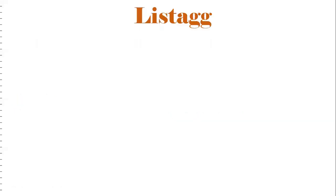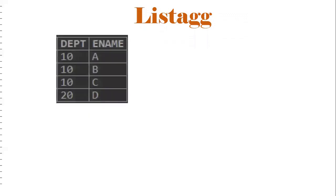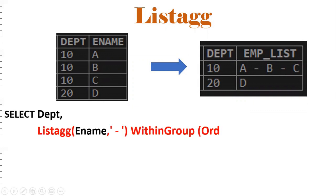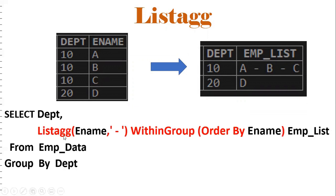Let's see one example to make the LISTAGG concept clear. This is a department table with department ID and employee name. My requirement is to display the employee list for department 10 — A, B, C — separated by a hyphen: A-B-C. To solve this, we use LISTAGG(ename, '-') WITHIN GROUP ORDER BY ename AS employee_list FROM emp_data GROUP BY department.